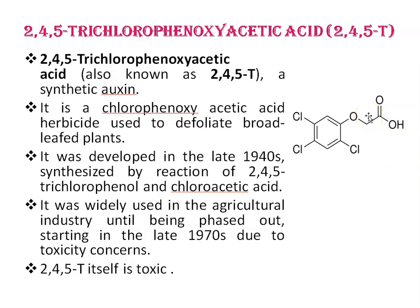2,4,5-trichlorophenoxyacetic acid (2,4,5-T) is also a synthetic auxin. It is a chlorophenoxyacetic acid herbicide used to defoliate broadleaved plants. It was developed in the late 1940s, synthesized by reaction of 2,4,5-trichlorophenol and chloroacetic acid. It was widely used in agriculture until being phased out starting in the late 1970s due to toxicity concerns, because 2,4,5-T itself is toxic.